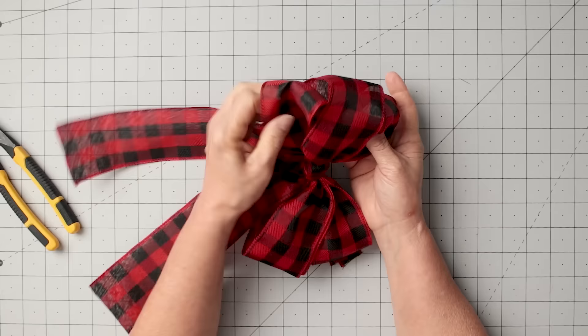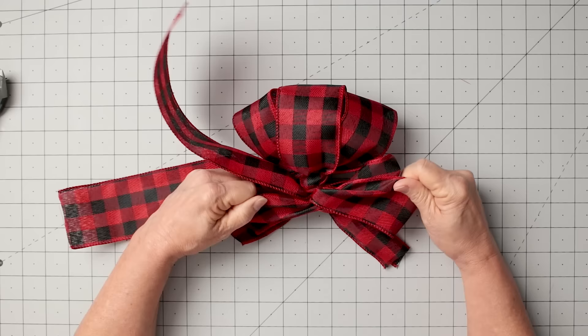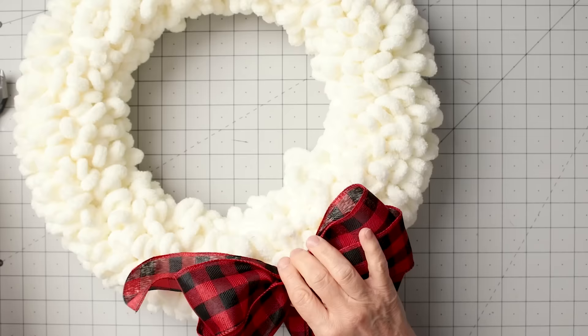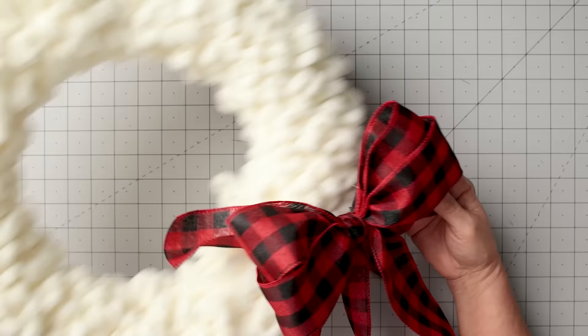Like I said, once I put it on the wreath or however I'm using it—maybe I put it on a lantern or something on the front door—then I will cut those streamers. But for the sake of showing you guys, I'm going to go ahead and cut them tonight. I'm just going to kind of hold my little bow up here to my loopy wreath that I made in an earlier video and I can link that below. That is another no-fail, like a couple-minute wreath.